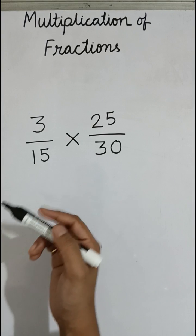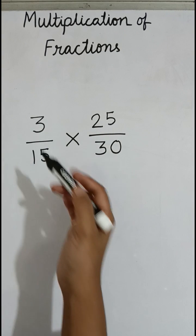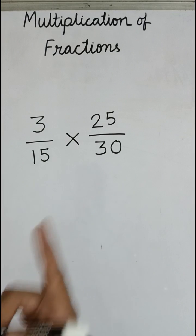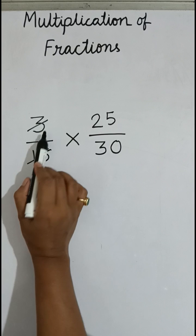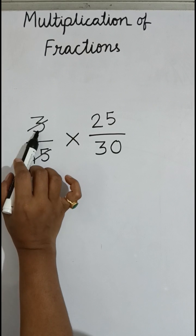We have to cut the numerator and the denominator with a common number, not different numbers. We use the common number which is 3. Now 3 divided by 3 is how much? 1. And 15 divided by 3 is how much? 5.